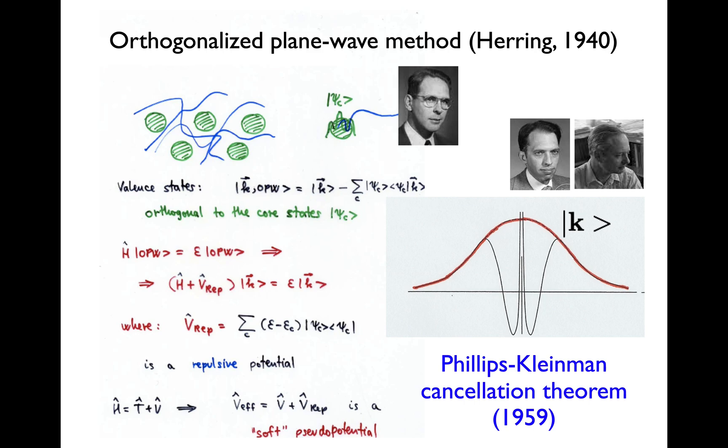Now, the formalism for the pseudopotential matured when Phillips and Kleinman proposed their cancellation theory. It was based on ideas by Herring, in particular his orthogonalized plane wave method, which embodies already the basic feature of the electronic states of valence electrons in the solid. They need to be orthogonal to core electrons. So, even if you think that your valence electron is going to be represented by some kind of soft wave function, when it gets to the nuclear region, it is going to be orthogonal to the core states, and so you need some kind of wave function that takes that into account. You add this term to the soft part that orthogonalizes the wave function to the core states.